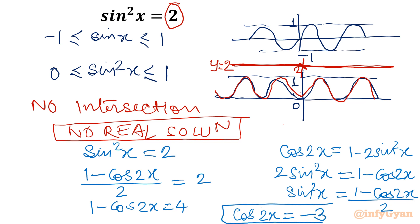See, the same question. It can be framed as cos 2x equal to negative 3, or sin square x is equal to 2. Both are the same questions. So now we have to solve cos 2x is equal to negative 3.